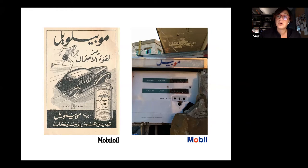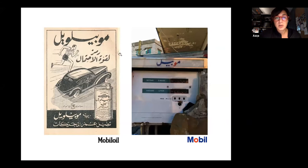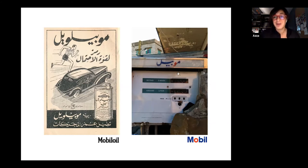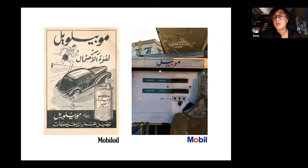An interesting case is Mobil Oil: it used to be called Mobil Oil with the Arabic in Naskh style. When they changed to just Mobil — shifting from serif to sans serif in Latin — the Arabic actually kept its original form, just dropping the word 'oil.' Maybe they didn't want to change because the Arabic logo had become so familiar.